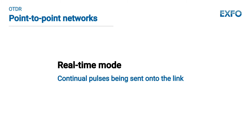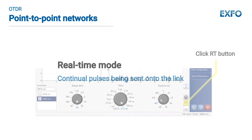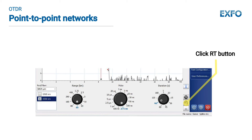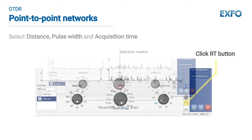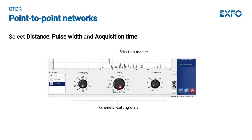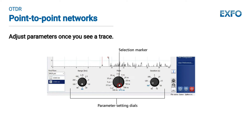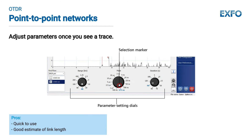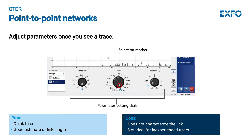Another testing method is to use the real-time mode. In this mode the OTDR is continuously sending pulses onto the link and providing a live view of the link. It could be used to get a quick assessment of the link or to determine if you are connected to the right link before performing a full measurement. While using real-time mode is quick and provides a good estimate of link characteristics since we can still see the optical events, it only gives a rough characterization of the link without the improved quality of averaging the results over the duration.